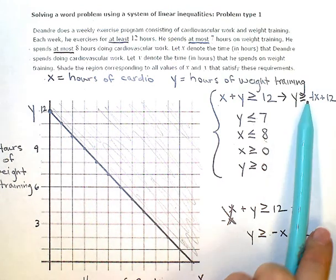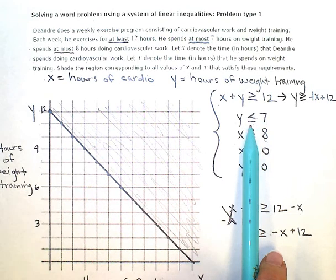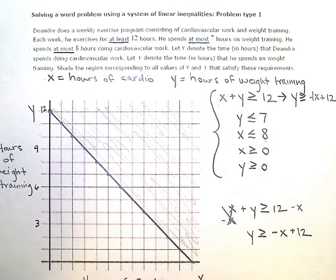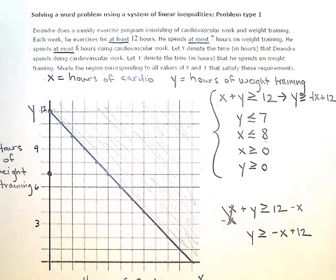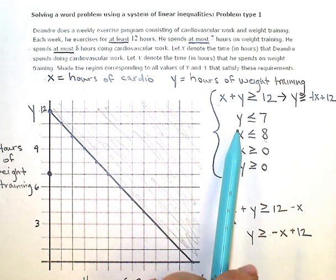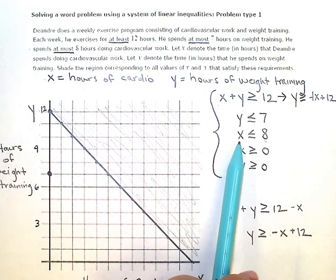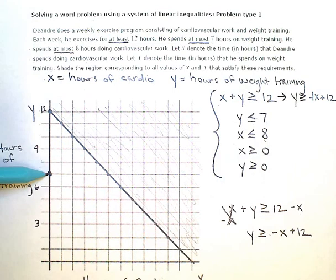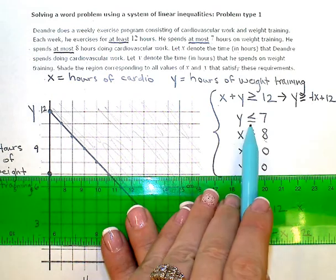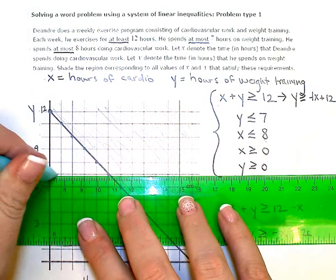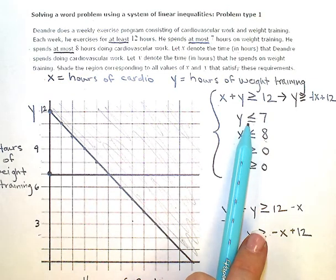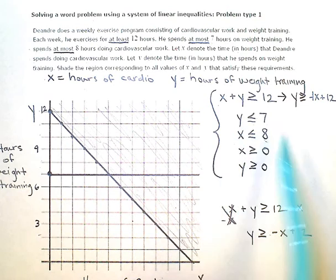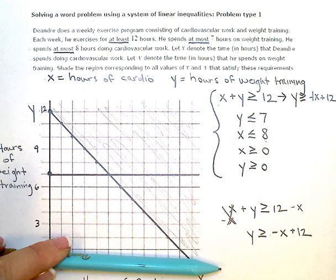This next one, Y is less than or equal to 7. I only have a Y. So on my Y axis, I put a dot at 7. And then I need a line going through that. When I only have Y or only have X, I'm dealing with horizontal or vertical lines. This one, since it needs to go through 7, the point 7 on the Y axis, it's going to be horizontal. And since I have the equal to involved, it's going to be a solid line, not dashed. And I'm interested in the points that are less than 7. So to this side of that horizontal line.